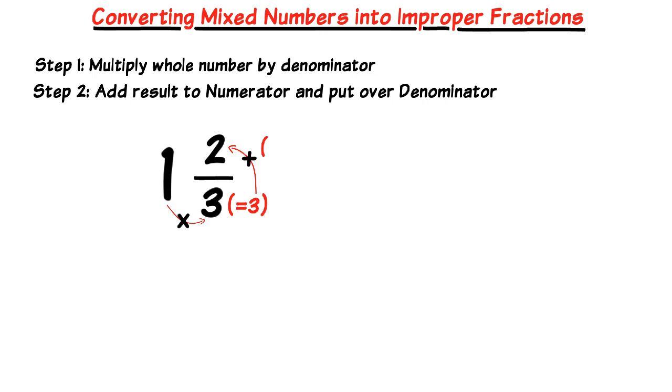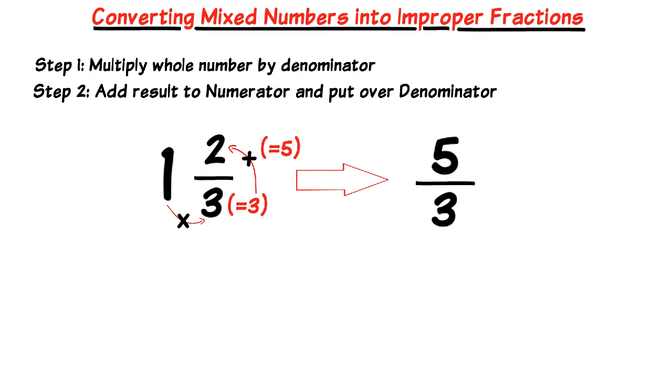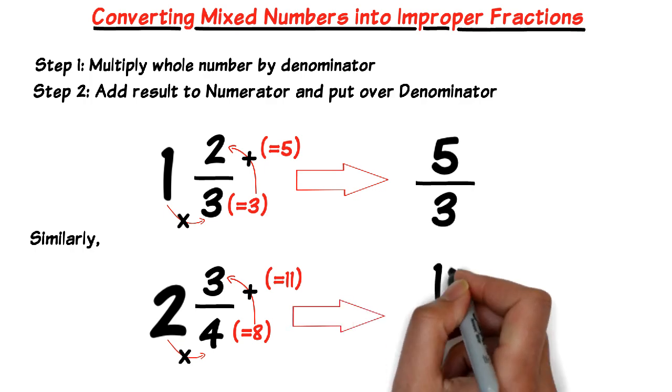Then we add that 3 to the 2, so we have 5. The denominator remains the same, so the improper fraction then becomes 5 over 3 or 5 thirds. Similarly, if we have a look at 2 and 3 quarters, if we take the 2, multiply by the 4, so 2 times 4 is 8, we add the 3 to it. So 8 add 3 is 11, so the improper fraction becomes 11 over 4.